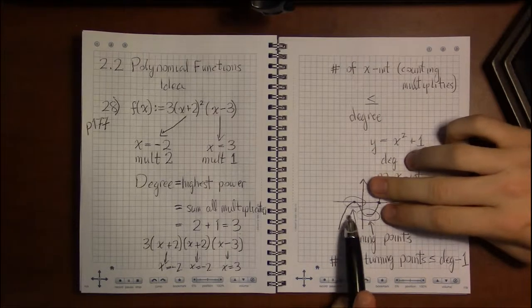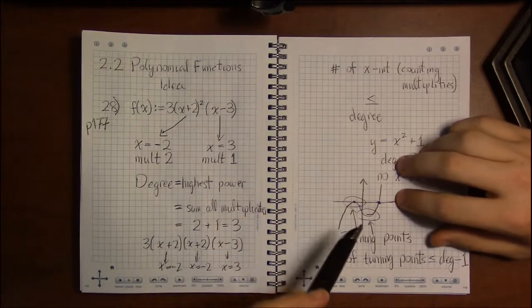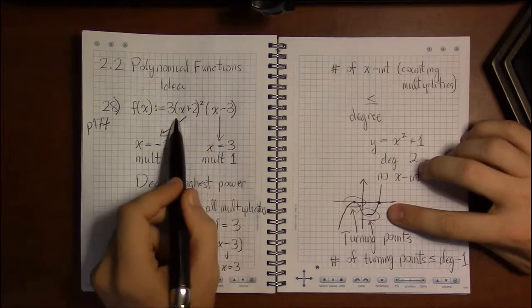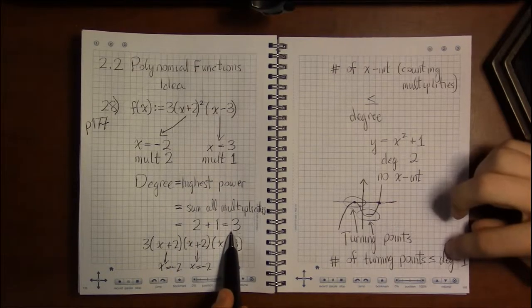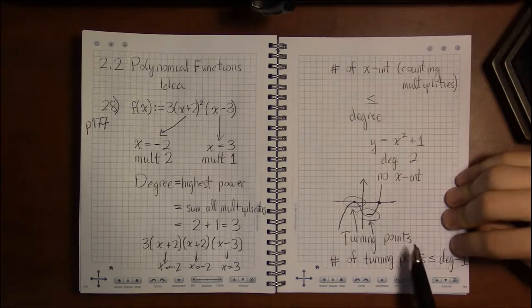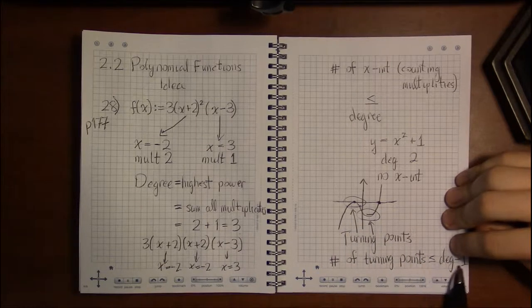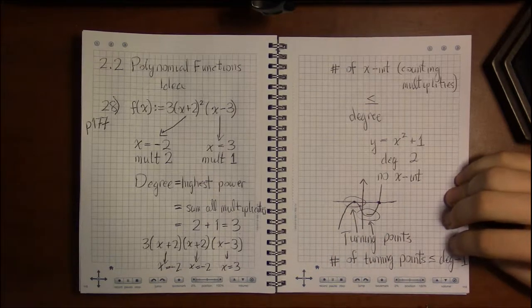So in this case, this has the most possible turning points that it can, because the degree of this polynomial is three. Three minus one, this can have—the number of turning points of this polynomial has to be less than or equal to two. And this has one, two turning points.